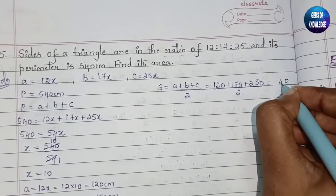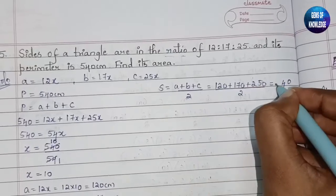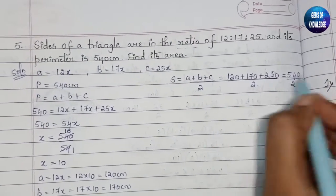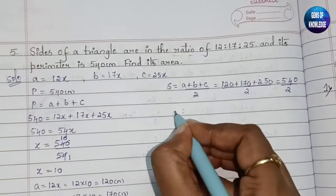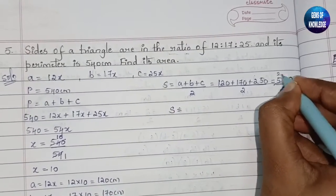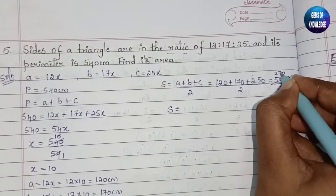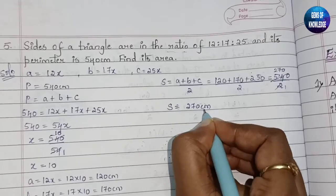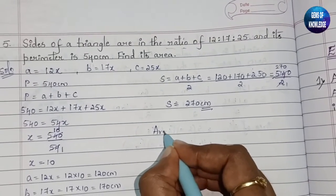The sum 120 plus 170 plus 250 equals 540, divided by 2 gives s equals 270 centimeter. Since the perimeter is already given as 540, s is simply 540 divided by 2, which is 270 centimeter.